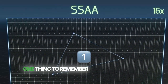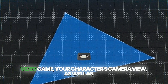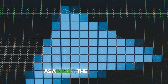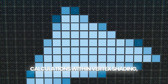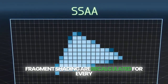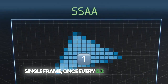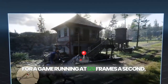One thing to remember is that when you're playing a video game, your character's camera view as well as the objects in the scene are continuously moving around. As a result, the process and calculations within vertex shading, rasterization and fragment shading are recalculated for every single frame — once every 8.3 milliseconds for a game running at 120 frames a second.